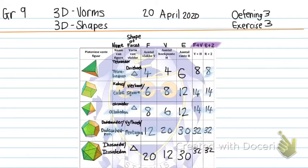Then I have an icosahedron. The icosahedron has triangular faces, 20 faces, 12 vertices, and 30 edges, giving 32 and 32 in the end. This is very important — you need to study this for the exam. Any of these can be asked in the exam.